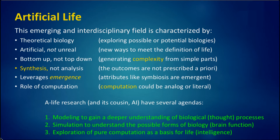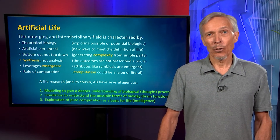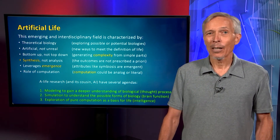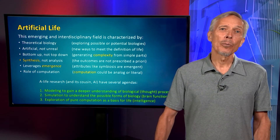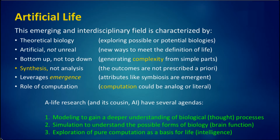It involves the idea of bottom-up, not top-down — what are the various ways of generating complexity, since life obviously is complex, from simple parts? It involves synthesis, not analysis, where the outcomes are not described and prescribed a priori. It also leverages interesting ideas in biology like emergence — the idea that life is not necessarily the sum of its parts, and that when you get sufficient complexity, new qualities and attributes emerge that could not have been predicted in a deductive way from the simple components, going beyond a reductionist idea of biology. And finally, it gives centrality to the idea of computation — that life's processes could be analog or literal and could occur in very different ways.